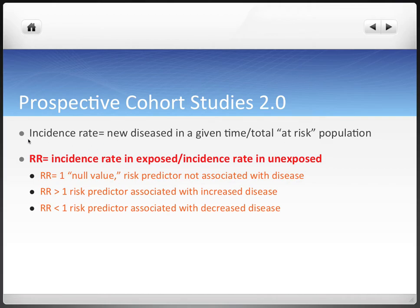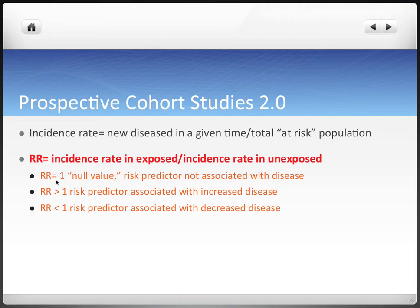We can find the incidence rate by taking new disease in a given time period and dividing that by the total at-risk population. Relative risk is our new calculation here. We take the incidence rate in people who are exposed to the risk predictor divided by the incidence rate in people who are unexposed, and then we compare this to see if it's greater than one or less than one, which tells us what the connection is between the exposure and the disease.